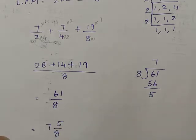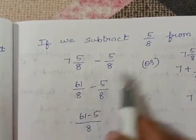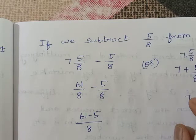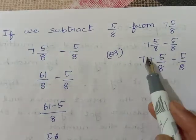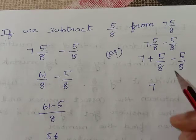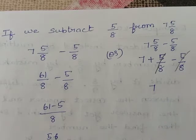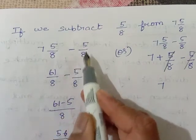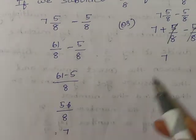Now, to make 7 and 5 by 8 the nearest whole number, we first try subtracting. If we subtract 5 by 8 from 7 and 5 by 8: 7 and 5 by 8 means 7 plus 5 by 8, minus 5 by 8. The 5 by 8 terms cancel, leaving 7. So the nearest whole number is 7. You can also verify: 61 by 8 minus 5 by 8 gives 56 by 8, and 8 divides 56 seven times — both methods give the same answer.